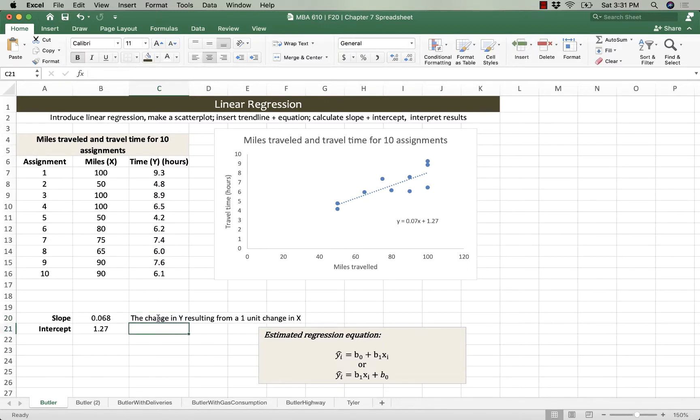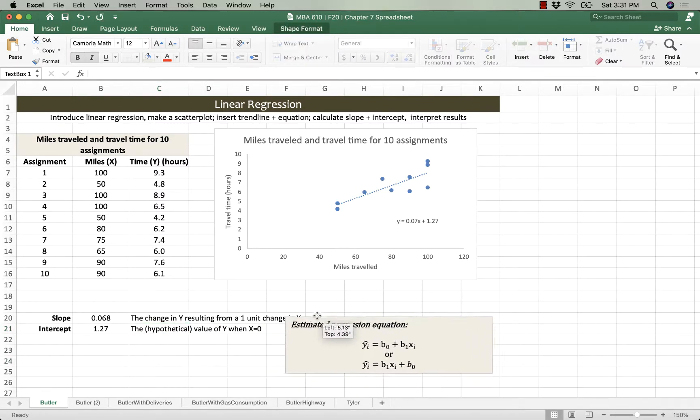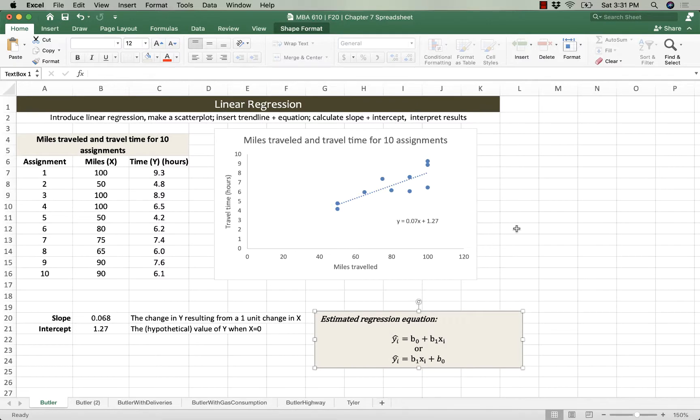And the intercept, we can think of that as the theoretical or hypothetical value of y when x is 0. And why do I call it the hypothetical value of y? Well, here I'll show you. If we were to take a look at this line, right now it's fit through the data points that we have, because we've got data on trips between 50 and 100 miles long.